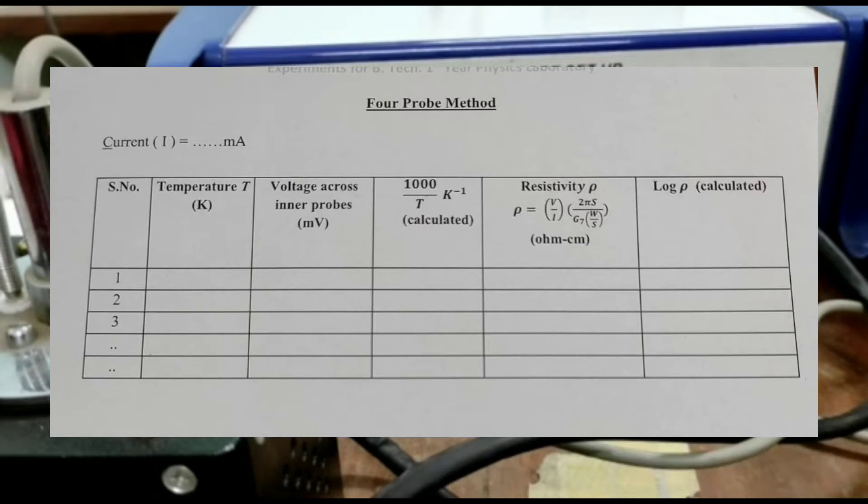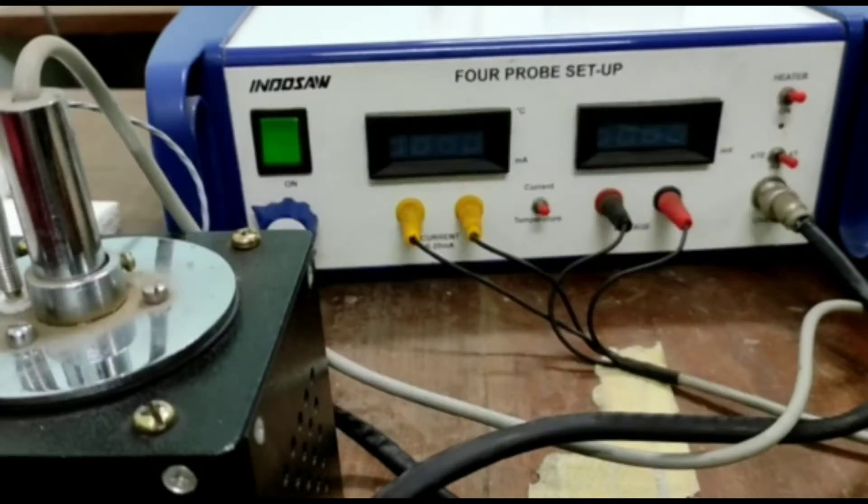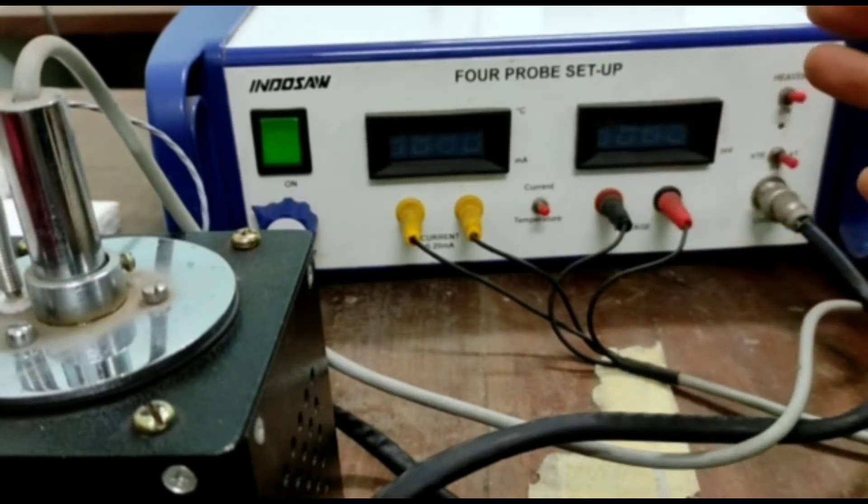Note down the probe spacing S and the thickness W of the semiconductor chip. Note the type of the semiconductor, either it is germanium or silicon.